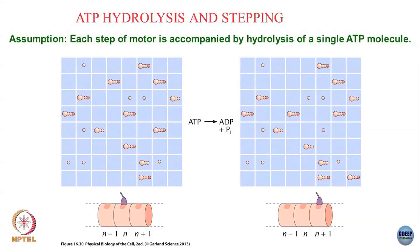In this lattice model, coupled to the motor stepping, the number of ATP molecules decreases by 1, and the number of ADP and phosphate molecules increases by 1 each. I can calculate the free energy difference between these two states, which gives me the free energy of hydrolysis of the ATP molecules.